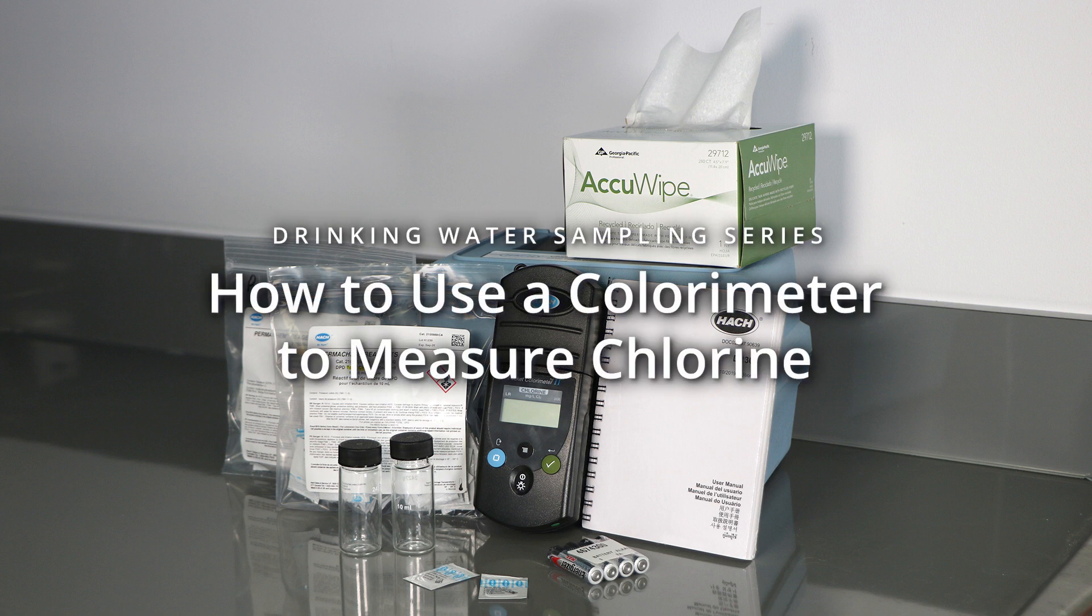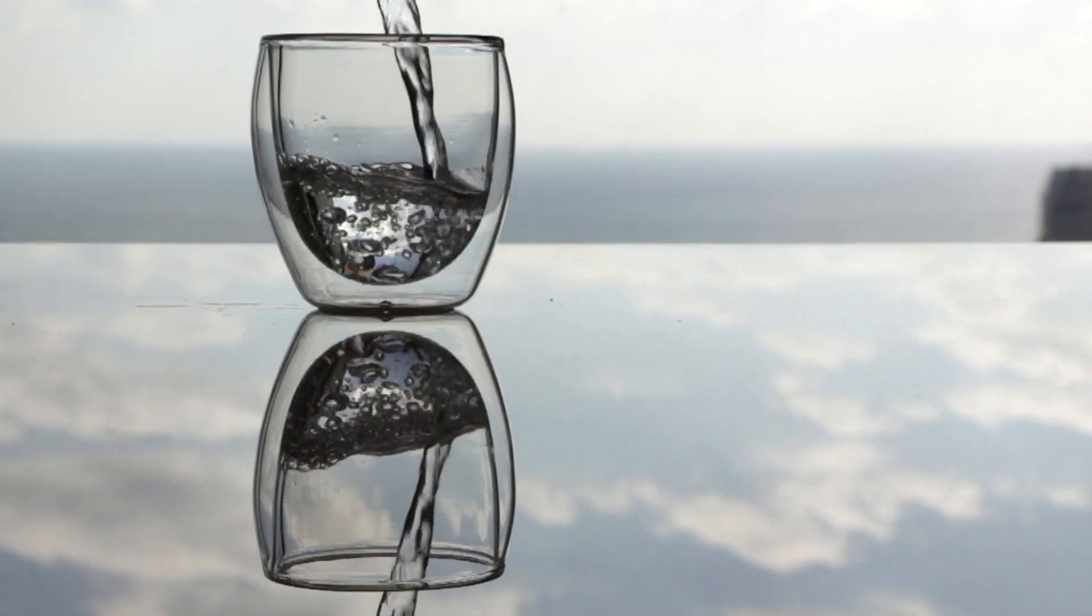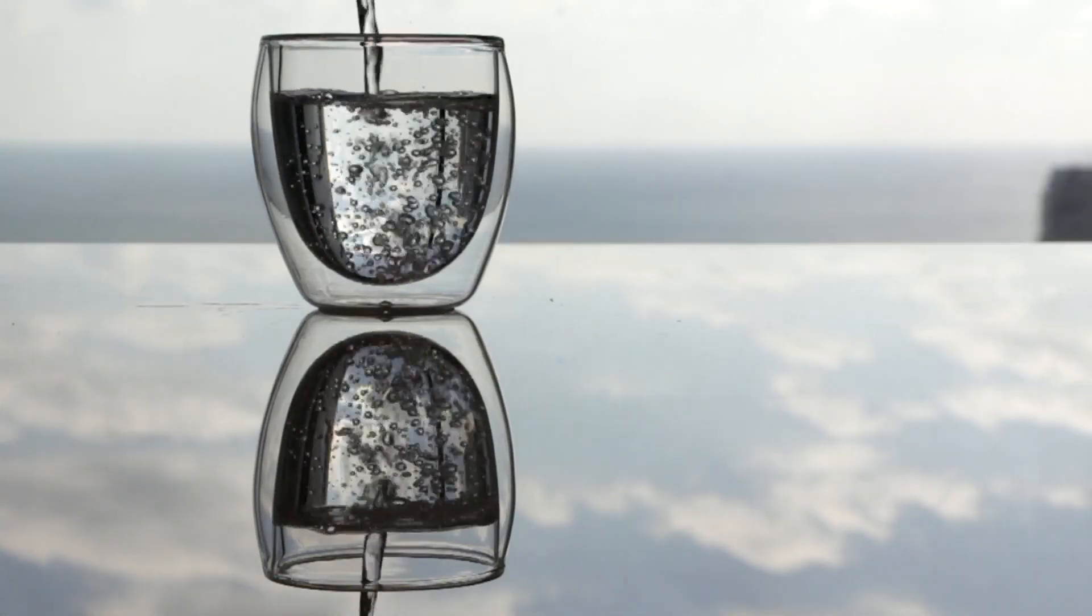Hi, I'm Cori from the First Nations Health Authority Environmental Public Health Team. Today we're going to go over how to use a chlorometer to measure chlorine. Measuring chlorine levels ensures that an appropriate level of chlorine remains in the drinking water distribution system to protect against microbial recontamination.